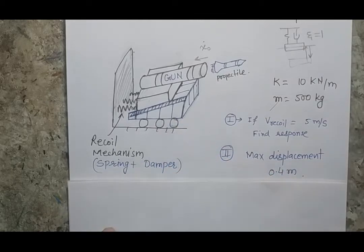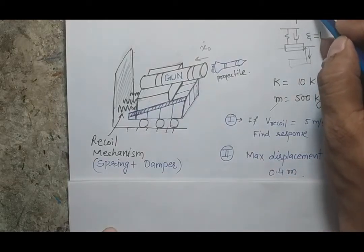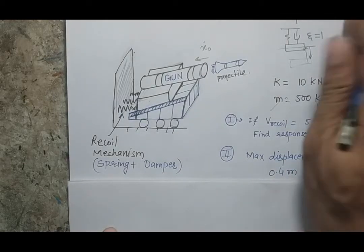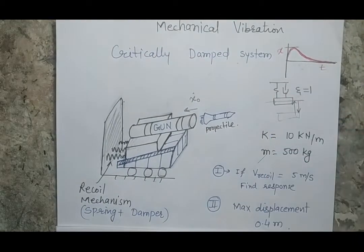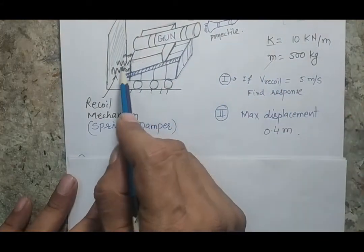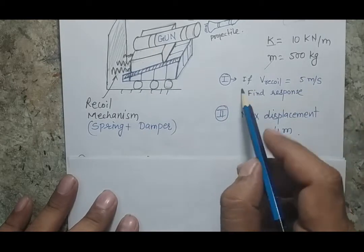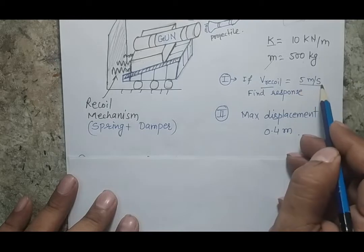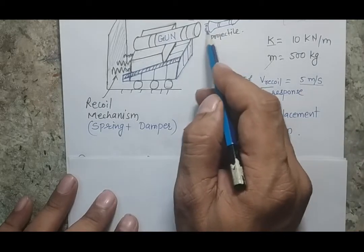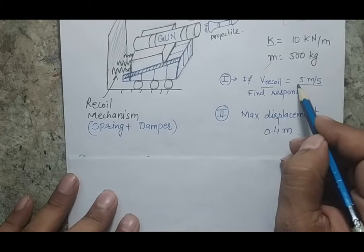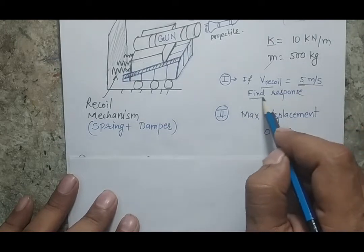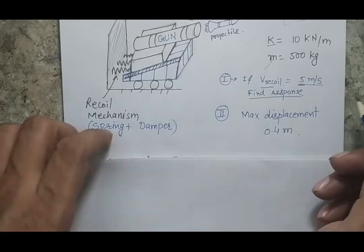The actual interest here is to have the system reach stationary conditions in minimum time so that you can fire the next projectile. That is why the system would be critically damped — there will be no vibration and the system will reach back to zero position in minimum time. Now let us read the problem: K is given as 500, and the recoil velocity V is 5 meters per second. This means whenever there is a projectile, the back force gives an initial velocity of 5 meters per second.